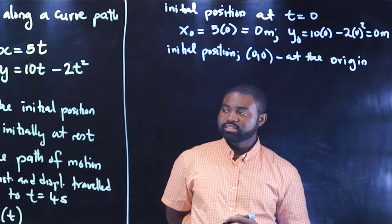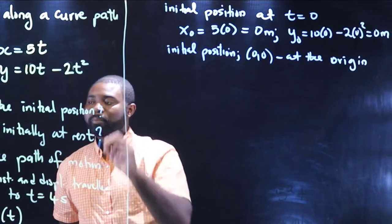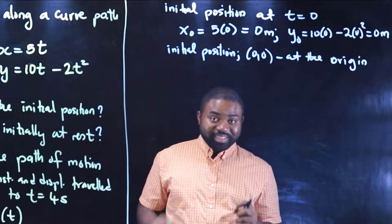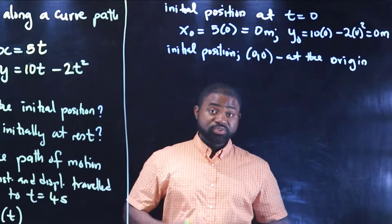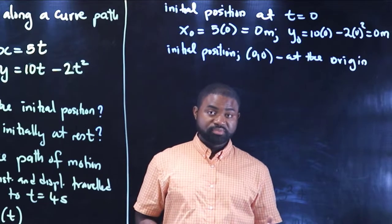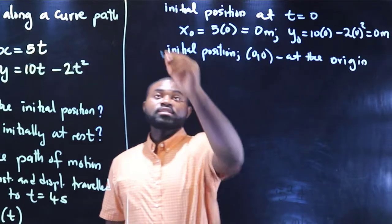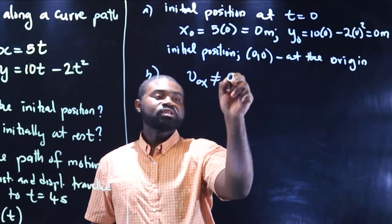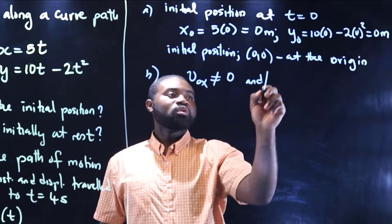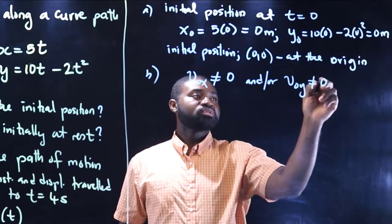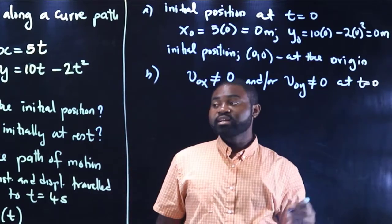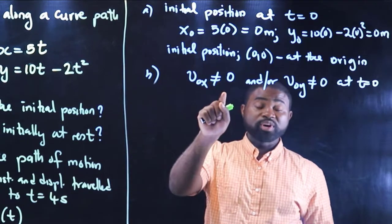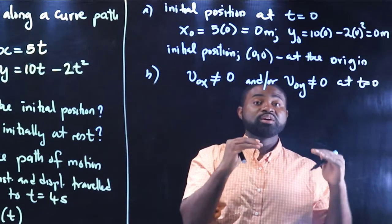The second question is: is the car initially at rest? How do we know whether the car is moving or at rest? Remember, a car at rest has zero velocity; a moving car has a non-zero velocity. So if we can show that vox is not equal to 0 and/or voy is not equal to 0 at t equal to 0, then the car is not initially at rest. Note that if vox is 0 but voy is not 0, the car will still be moving.